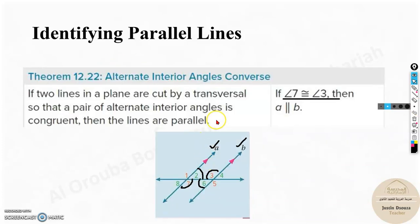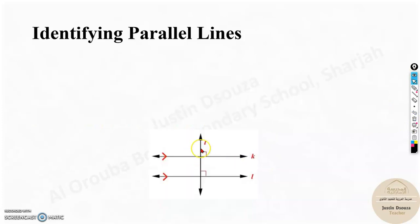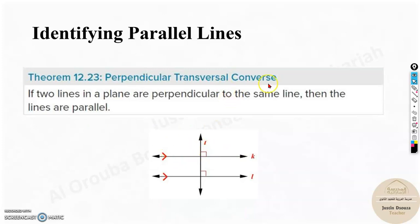Now, identifying parallel lines. With alternate interior angles — we know this is interior and this is the alternate interior angle. Angles 7 and 3 are also alternate interior angles, opposite each other. If both are congruent, then the lines are parallel. Similarly, for the perpendicular transversal converse: if two lines are perpendicular to the same transversal line, then those two lines must be parallel.